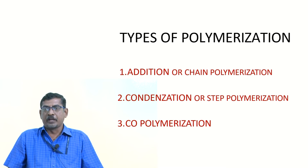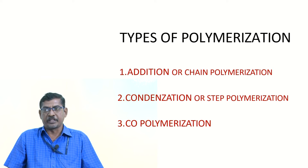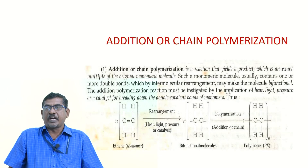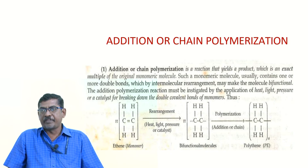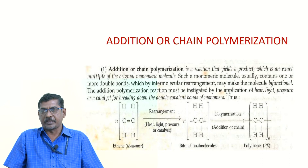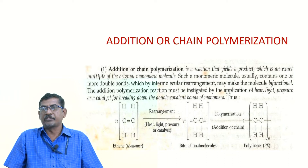Next is the type of polymerization. Based on the formation of the polymer, it is classified into three types: addition or chain polymerization, condensation or step polymerization, and co-polymerization. Addition or chain polymerization is defined as: only one type of monomer is involved, no byproducts are formed, and the product is exactly a multiple of the monomer.